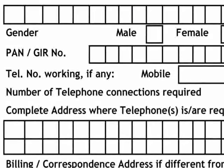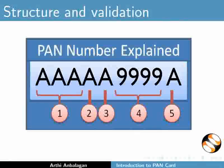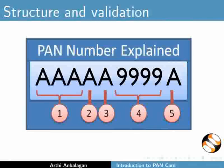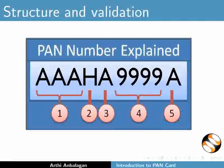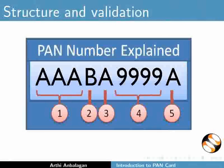Pancard is needed for application for issue of a credit card and for application of a telephone connection. The PAN structure is as follows: the first five characters are letters, the next four are numerals, and the last character is a letter. The first three letters are a sequence of alphabets from AAA to ZZZ. The fourth character informs about the type of holder: P for Person, C for Company, H for HUF, F for Firm, A for AOP (Association of Persons), T for Trust, B for BOI (Body of Individuals), L for Local Authority, J for Artificial Juridical Person, and G for Government.